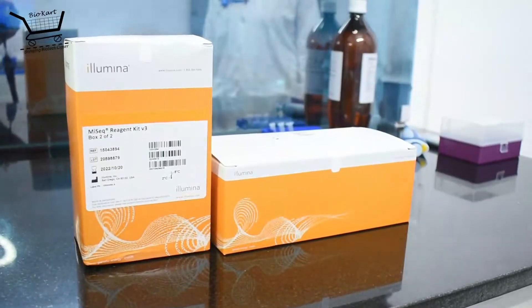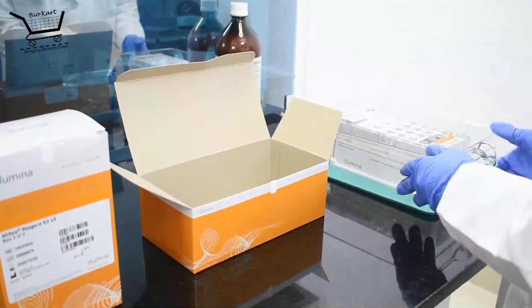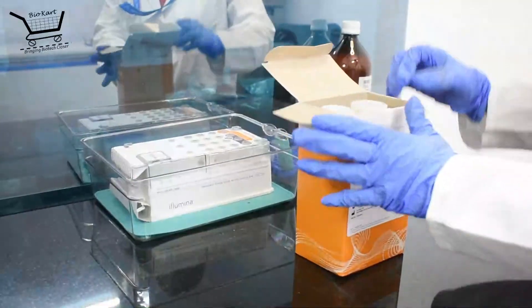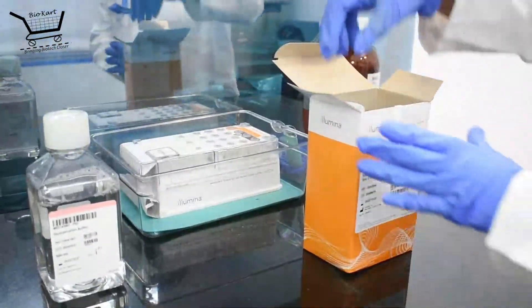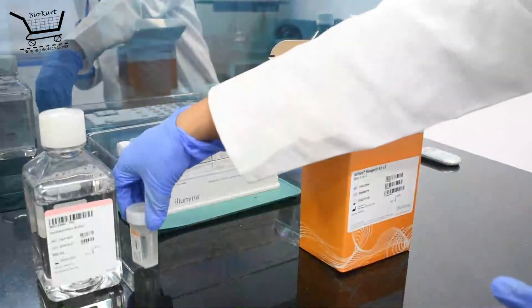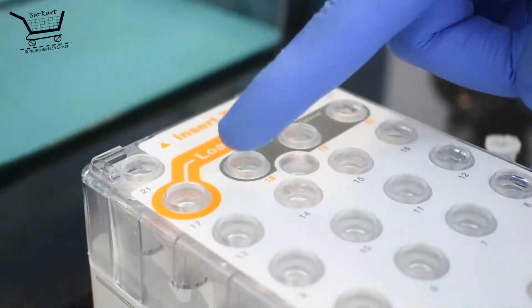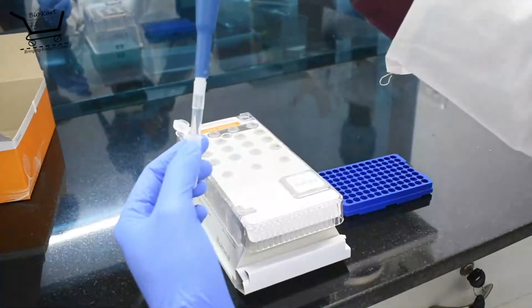The MySeq V3-600 cycle kit and flow cell from Illumina is used. It consists of two parts. The first part contains the flow cell and the buffer which is stored at 4 degrees. The second part consists of reagents required to perform the sequencing run and stored at minus 80 degrees. The pool library is diluted to 4 nmol and the concentration is further reduced to a final loading concentration of 10 picomol. This is loaded into the designated place of the reagent kit. The kit and the flow cell are loaded into the MySeq and the run is started.